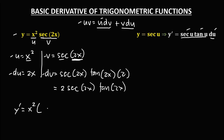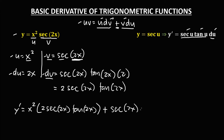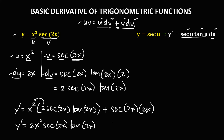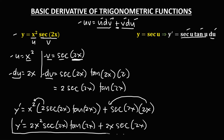So y' equals u times dv — u is x², and dv is 2·sec(2x)·tan(2x) — plus v times du — v is sec(2x), and du is 2x. Placing 2x before sec(2x), we have 2x·sec(2x)·tan(2x) + 2x·sec(2x). So this is now the derivative.